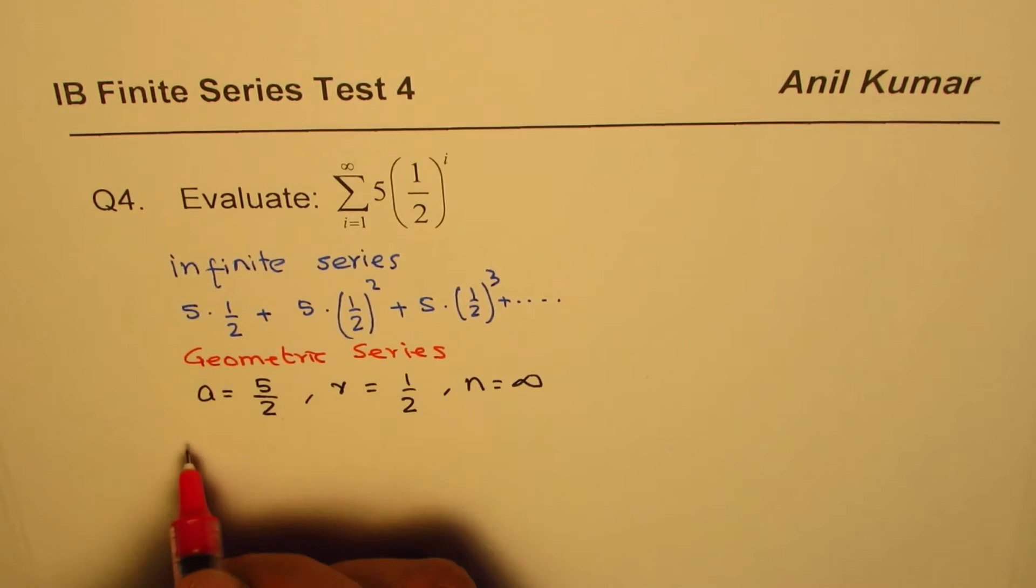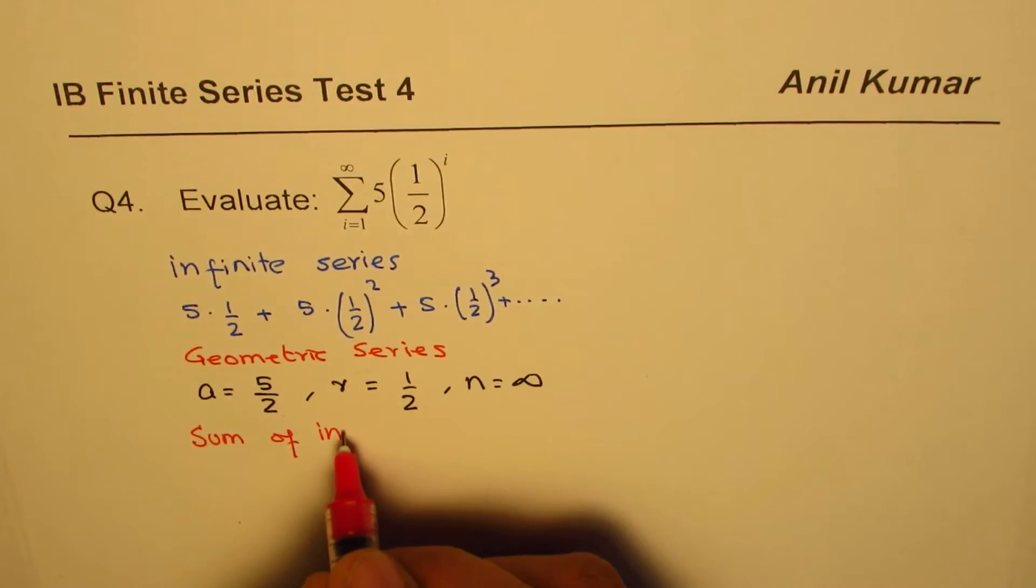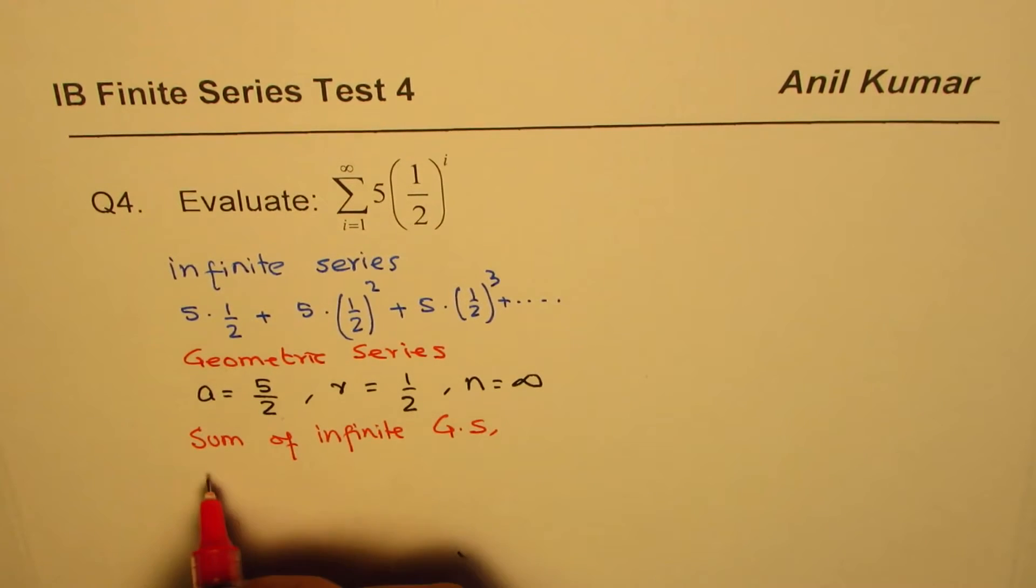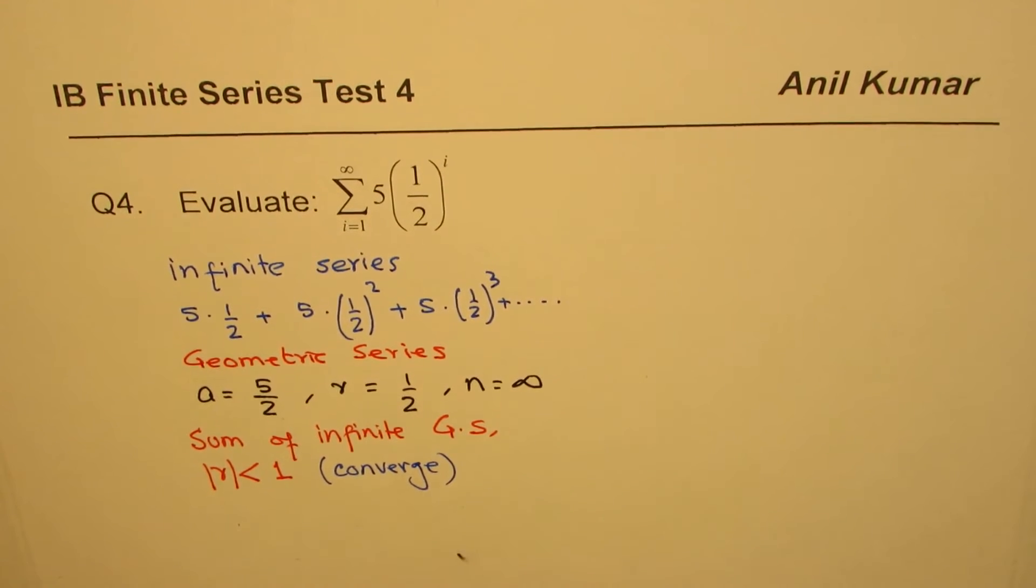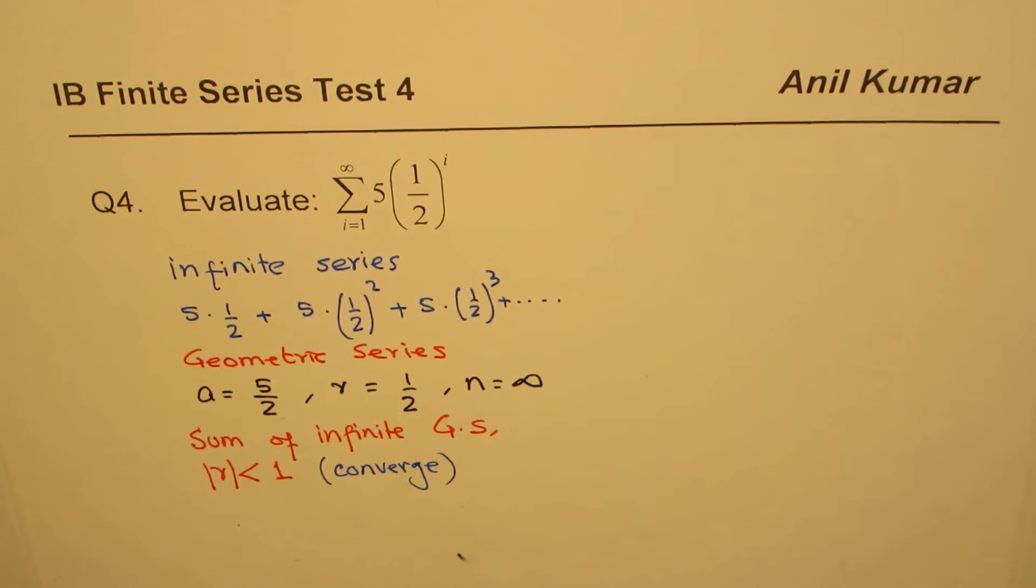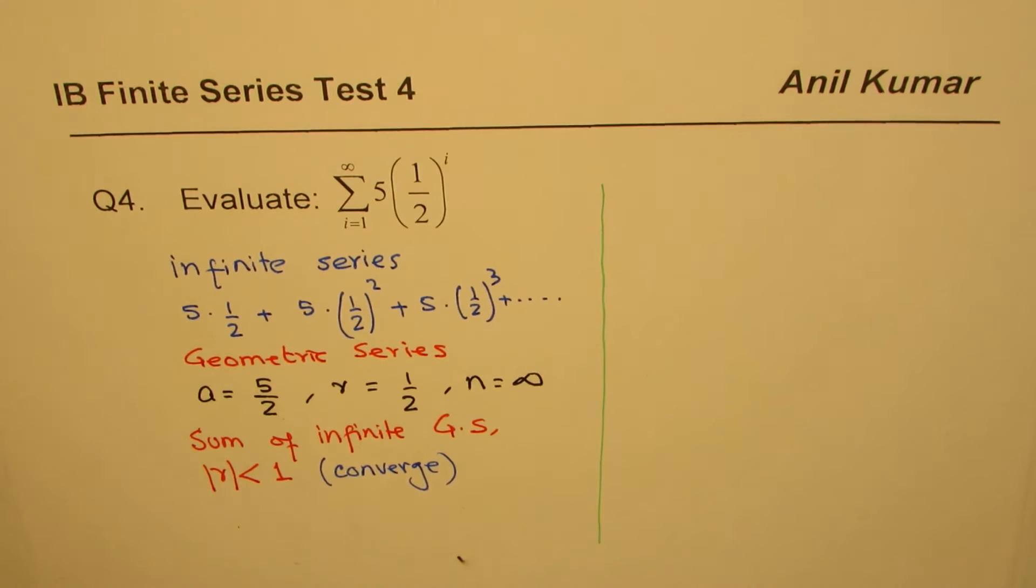What is the sum of an infinite geometric series? Do you know the formula? Sum of infinite geometric series when the absolute value of r is less than one. So only if r is less than one it will converge, and therefore it will have some sum. If r is greater than one, it will not converge, so it will not have a finite sum. The sum will be infinite.